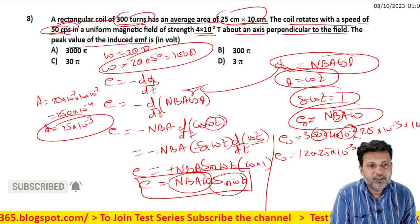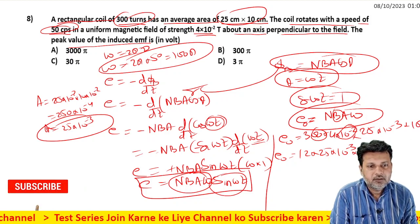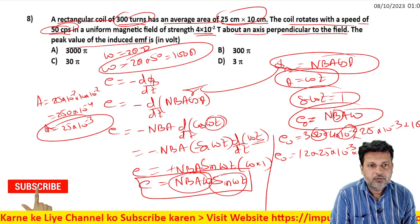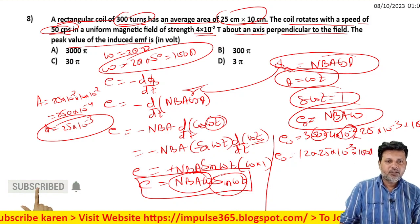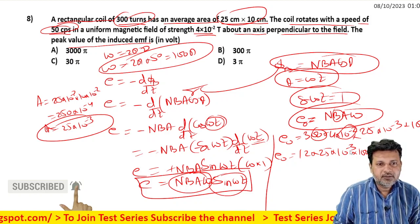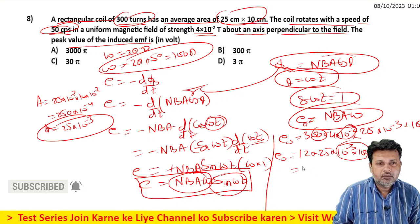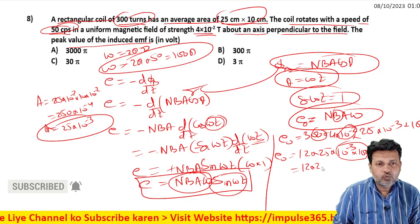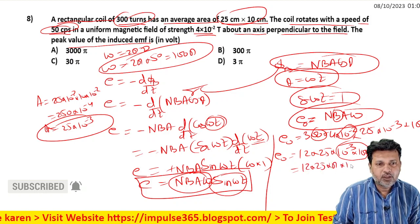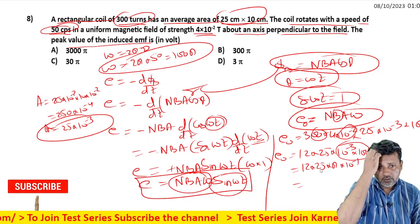Continuing: 12 × 25 = 300, so we get 300π × 10^-1.